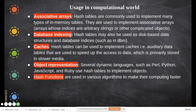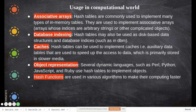For object representation, several dynamic languages such as Perl, Python, JavaScript, and Ruby use hash tables to implement objects. Hash functions are used for generating a unique address and accessing data, which makes algorithm execution fast.